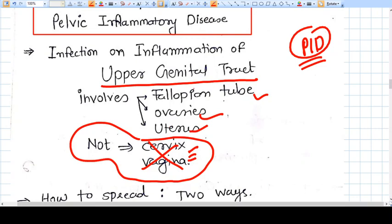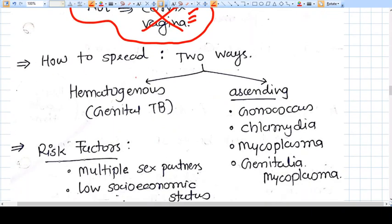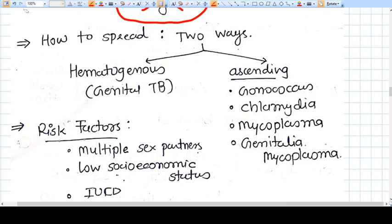Now, how does the infection spread to these structures? Because these are internal abdominal structures, there are only two ways to reach those organs. The first one is ascending, and very common is ascending infection.